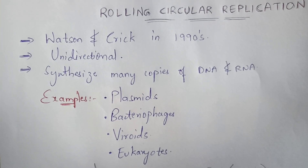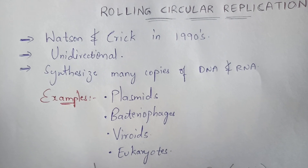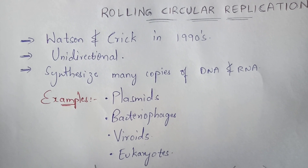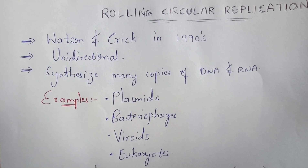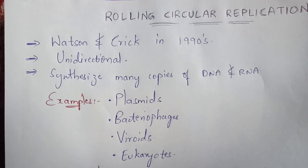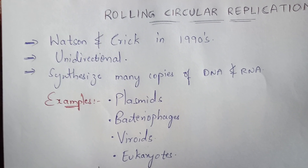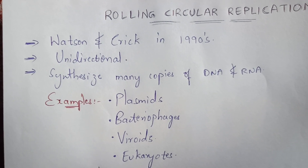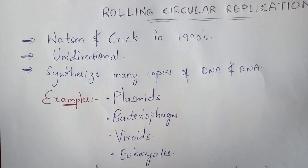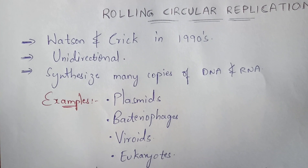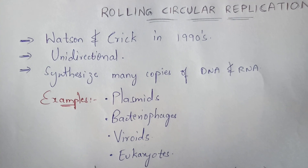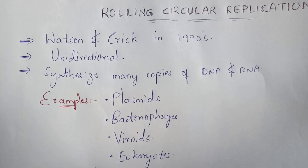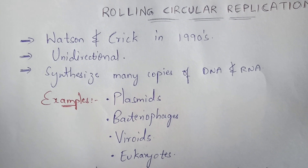Coming to the third point: synthesis of many copies of DNA and RNA. Due to this rolling circular replication, one DNA particle leads to formation of two daughter DNAs, then four, then eight — and in this way, synthesis of many copies of DNA and RNA takes place.